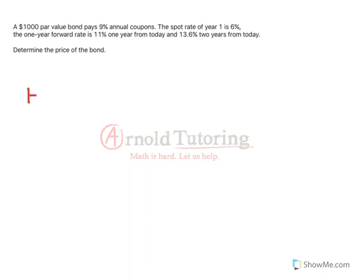We've got our $1,000 bond, it pays 9% annual coupons, just like last question, and it is a 3 year bond again. I'm going to do our timeline, so 1, 2, and 3.